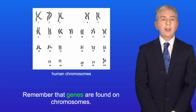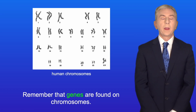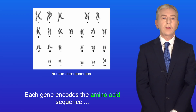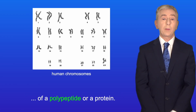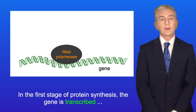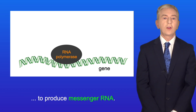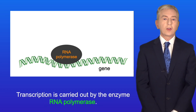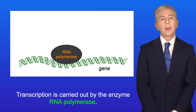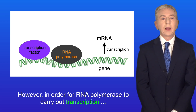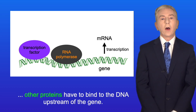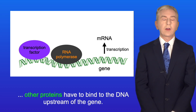Remember that genes are found on chromosomes. Each gene encodes the amino acid sequence of a polypeptide or a protein. In the first stage of protein synthesis the gene is transcribed to produce messenger RNA. Transcription is carried out by the enzyme RNA polymerase. However, in order for RNA polymerase to carry out transcription, other proteins have to bind to the DNA upstream of the gene.